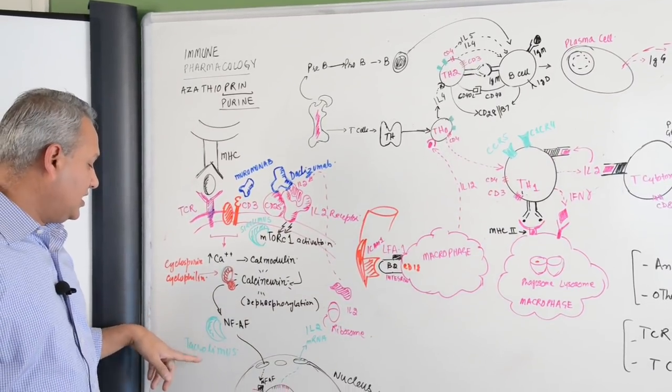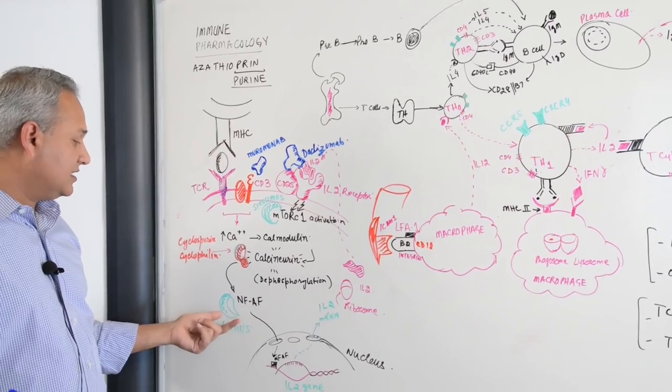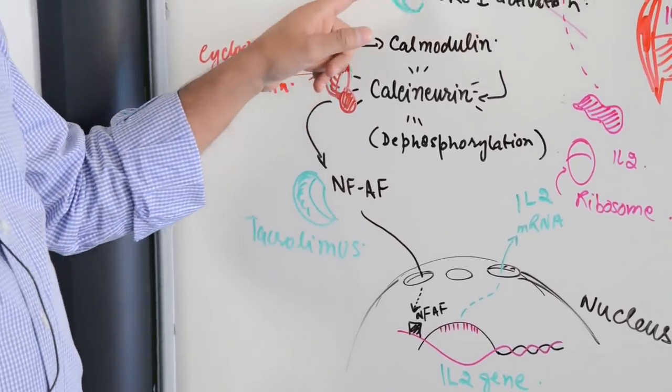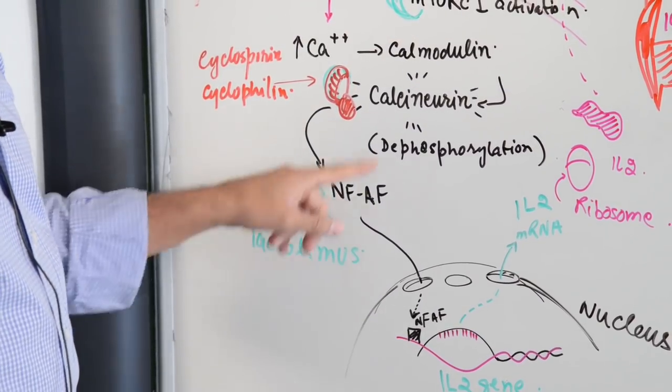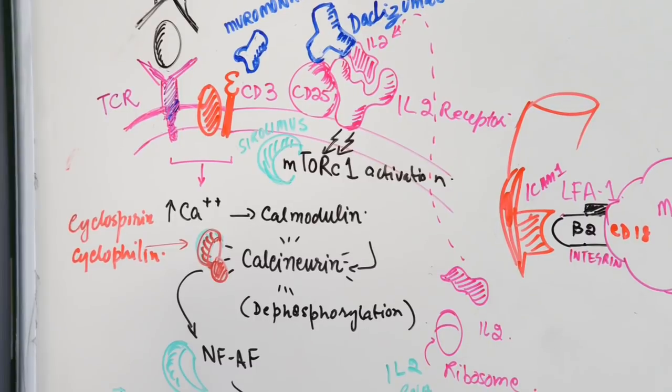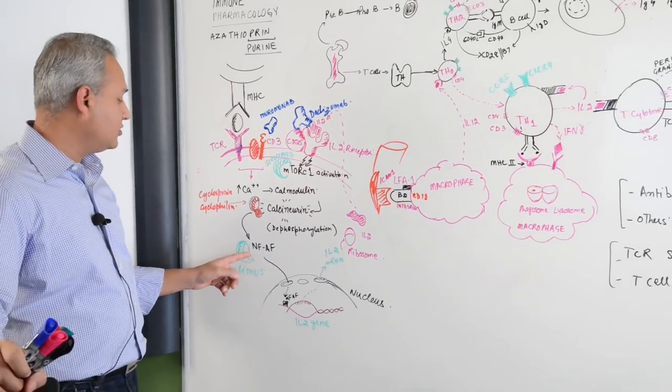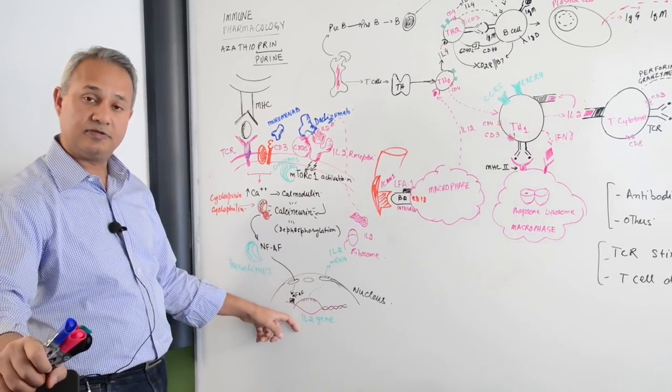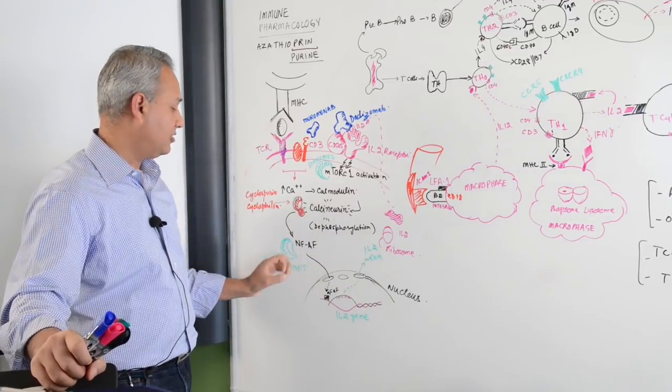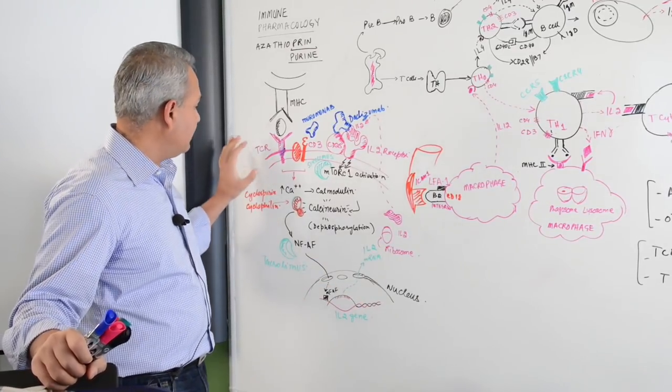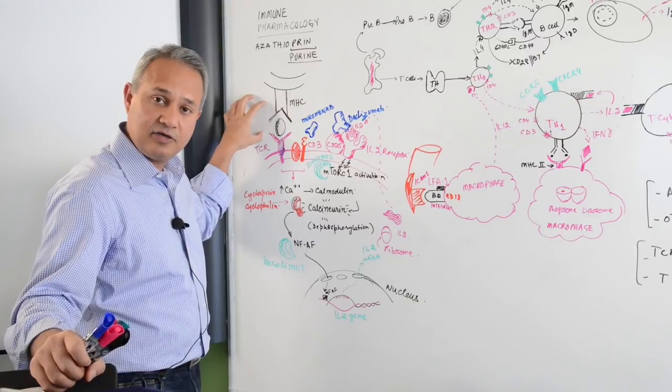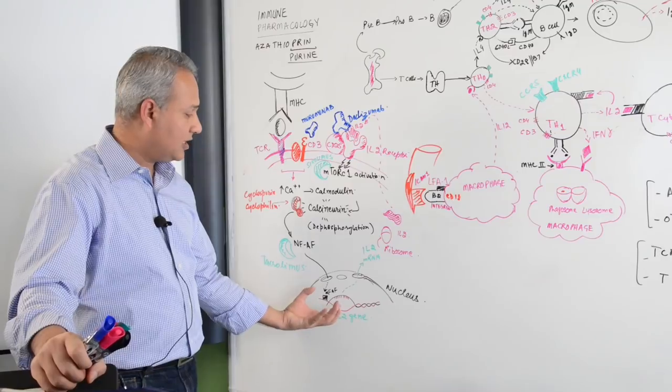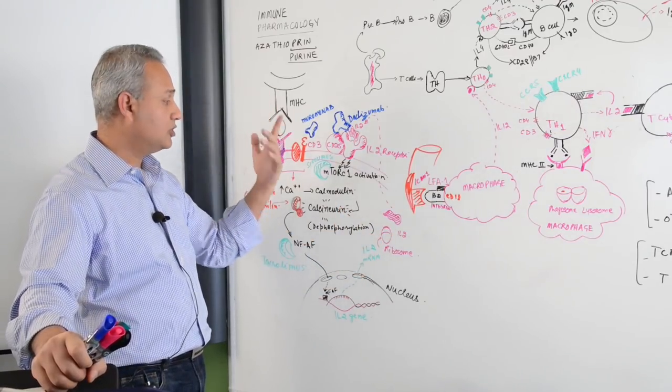Now let us talk about the tacrolimus. Tacrolimus what it does is, it binds to the, it is an FK binding protein, both the limus proteins, limus and limus here, they are FK binding protein. Tacrolimus would bind to NFAT protein and then it would not let it go to the nucleus and again IL-2 will not be formed. That is tacrolimus. Let us say we got this receptor signaled or activated, we got the signal transduction done, we got the gene opened up, we got the ribosome activated, we got IL-2 produced.